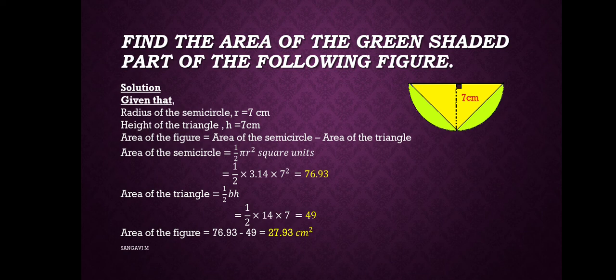We get the value 49. Now we need to find the green shaded part. So this equals 76.93 minus 49. We get 27.93 centimeters squared.